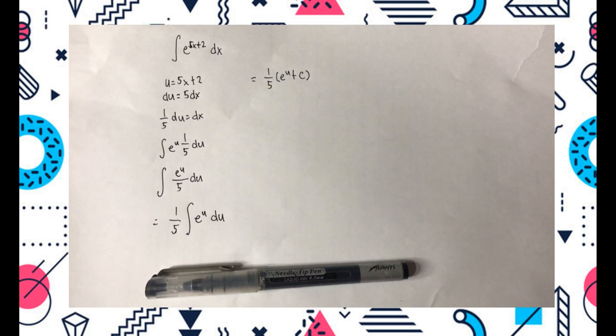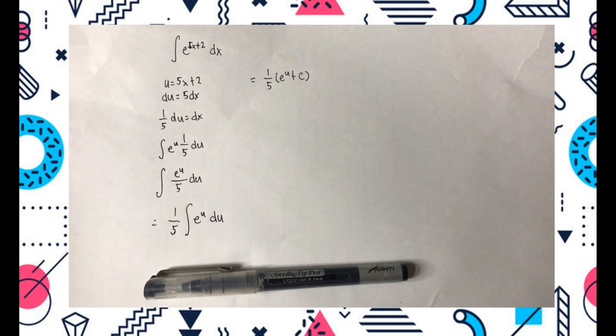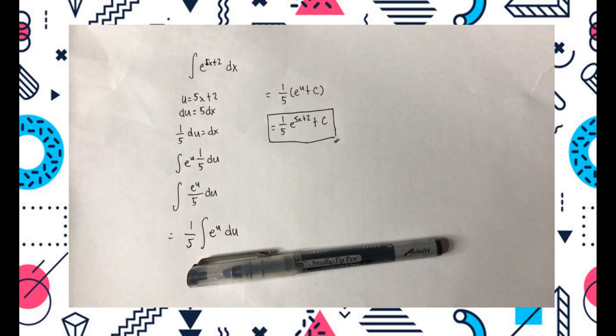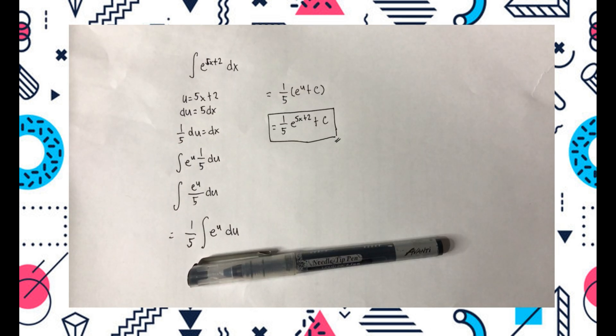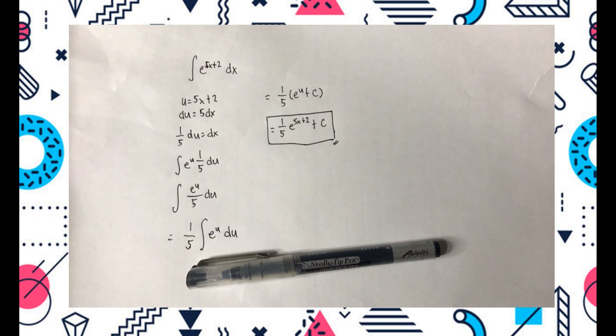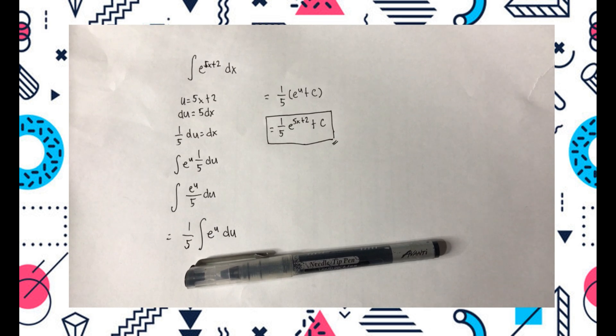The integral of e raised to u with respect to u is e raised to u. Simplify and replace all occurrences of u with 5x plus 2. The final answer is 1 over 5 e raised to 5x plus 2 plus c.